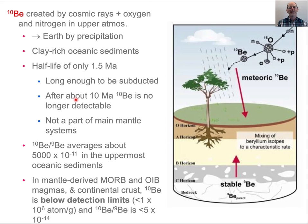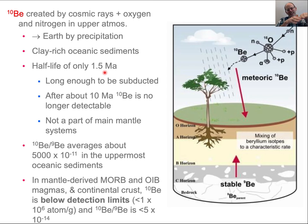The last thing I want to talk about — and it's so cool — is beryllium-10 and boron. Beryllium-10 is produced in the upper atmosphere by cosmic rays and rains out on the Earth. There's very little of it, and it has a half-life of only 1.5 million years. But that half-life is long enough that Be-10 deposited on the ocean surface gets subducted, lost from the slab in water, gets up into the mantle, and creates partial melt.